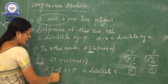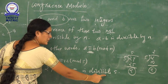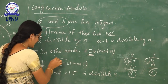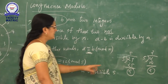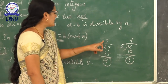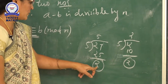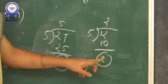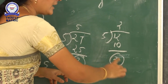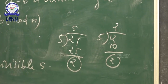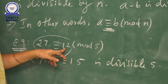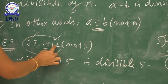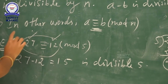I will give one example: 27 congruent 12 mod 5. The difference of these two numbers is divisible by 5. That is, 27 minus 12 equals 15, and 15 is divisible by 5. Now, 27 divided by 5 gives remainder 2, and 12 divided by 5 also gives remainder 2. Both numbers have the same remainder, so they are the same shape but different size — therefore both numbers are congruent to each other.